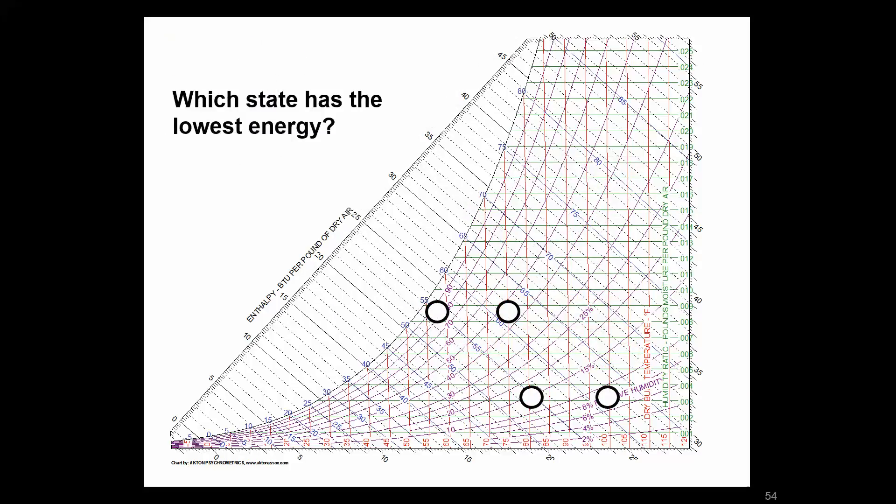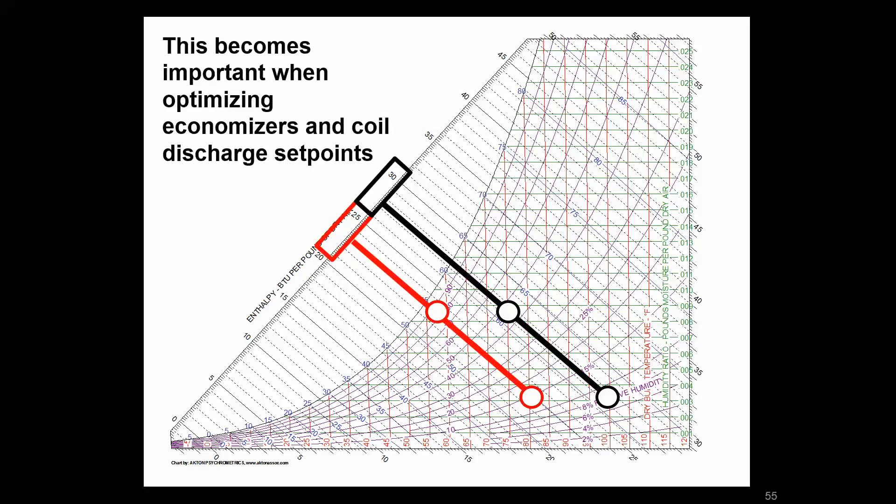So there's another example to explain how this is going to matter going forward. If we look at a couple different states and we wanted to intuitively understand which one had less energy, we can look at 55 degree air that's saturated all the way on the left, and then fairly dry air on the right that's 100 degrees. And we may ask the question, which has less energy content? There's actually two lines of constant enthalpy at play here. We can see that because enthalpy captures the sensible and latent components of a given state, you can have much colder air that has the same or less energy content than more moist, warmer air.